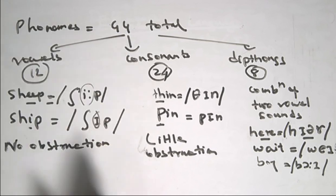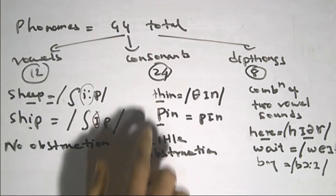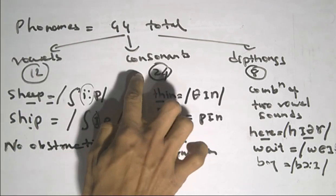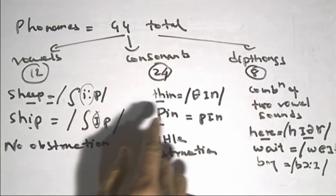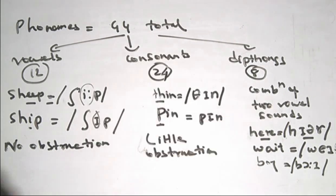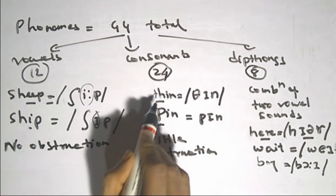Next, consonants. Consonants are a total of 24 sounds. When you are able to find the sound, there is some form of obstruction in the mouth.